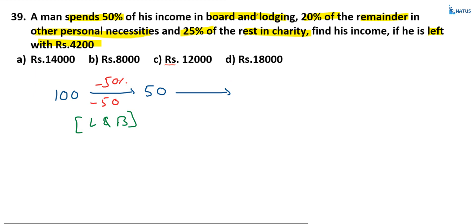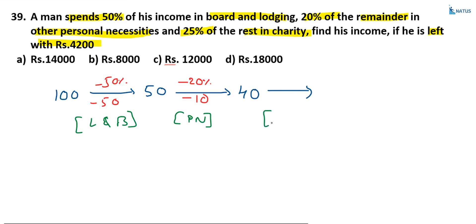Afterwards, 20% of the remainder goes to personal necessities. 20% of 50 is 10, so 50 minus 10 = 40 remains. Next, charity: the question states 25% — wait, it is 20% of the rest — but applying 25% of 40: that is one-fourth of 40, which is 10. So 40 minus 10 = 30 remains.